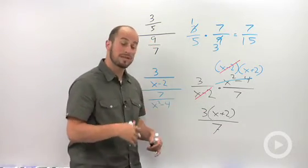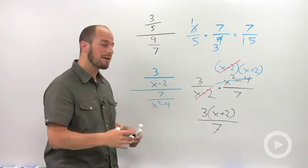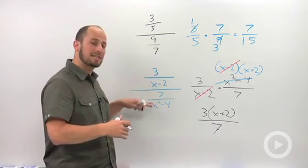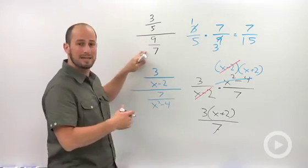You could distribute this 3 through if you wanted, you don't have to. This answer would typically be perfectly acceptable. Whenever we have a single fraction over a single fraction, it's called a complex fraction, and we solve it as we would with any other type of number.